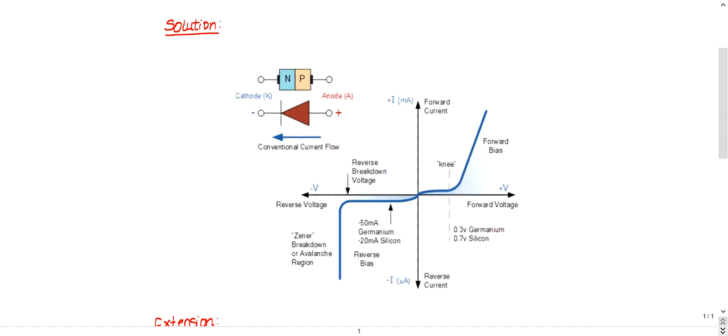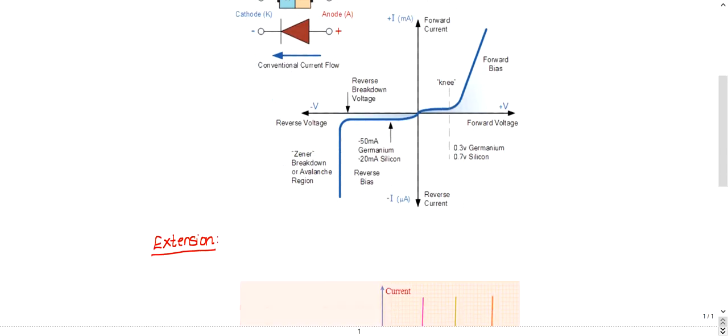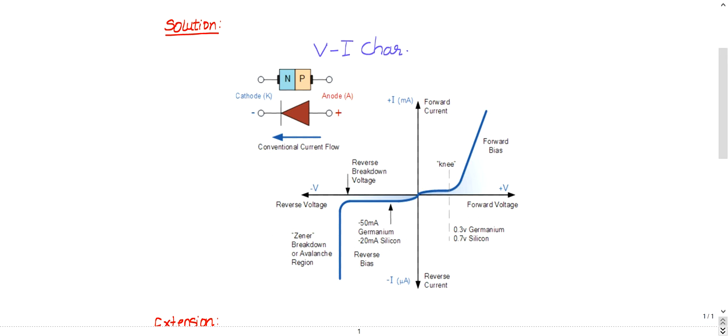Let me help you recollect the V-I characteristics of a PN junction diode. You might have already known about the PN junction diode. It has a P-type and N-type region. This acts as an anode, and this acts as a cathode.